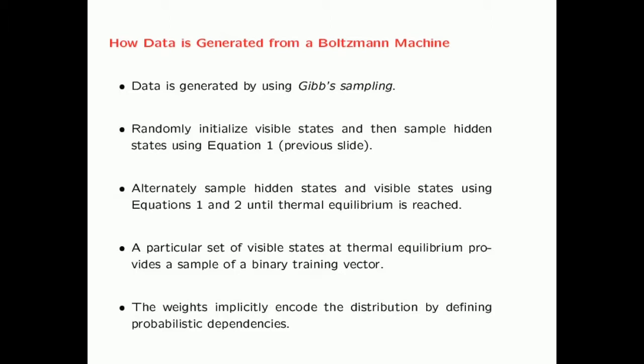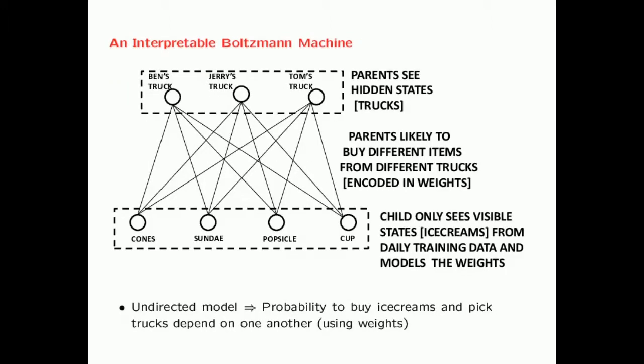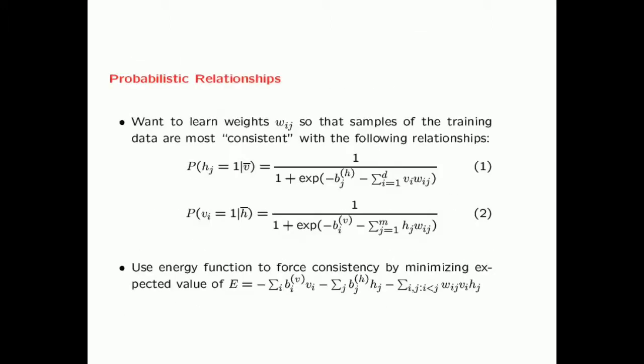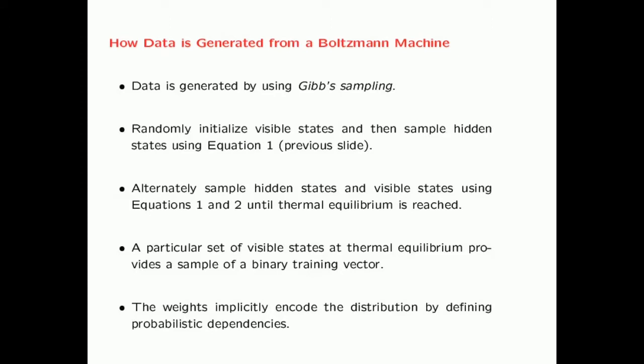Thermal equilibrium theoretically requires an infinite number of iterations, but in practice a large number is sufficient. At thermal equilibrium, a particular set of visible states provides a sample of the binary training vector. To generate the next sample, you cannot just use one more iteration—you have to repeat the entire Gibbs sampling again for a large number of iterations. Generating samples with this approach can be very expensive. The weights implicitly encode the distribution by defining the probabilistic dependencies between the hidden and visible states.